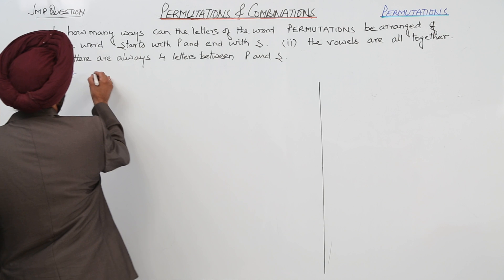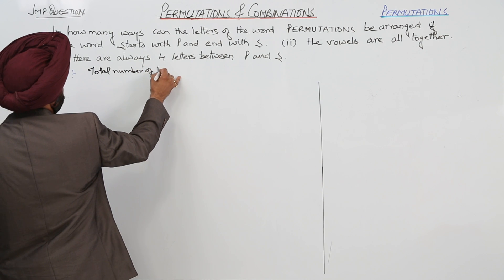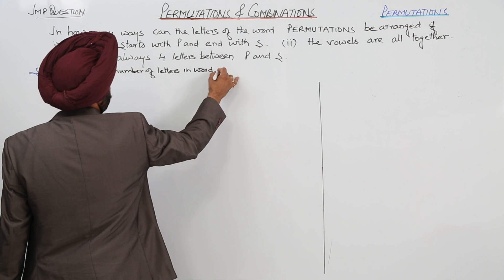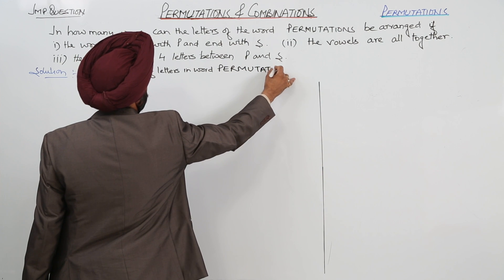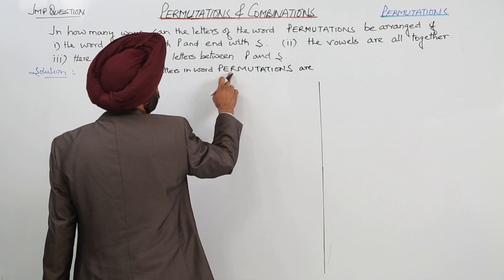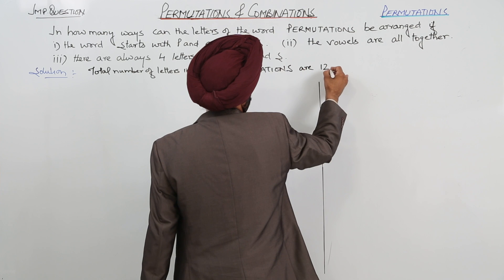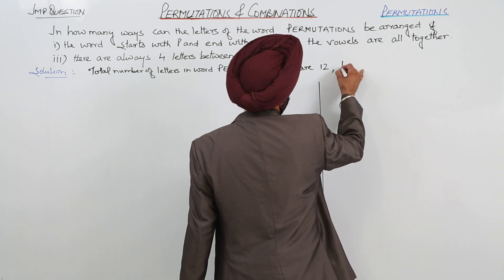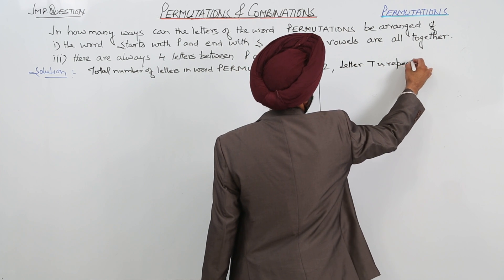The total number of letters in the word PERMUTATIONS are 12. And only T is repeated — T is repeated twice.